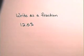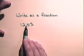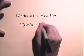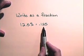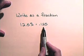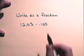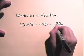Now let's write twelve point five percent, or twelve and a half percent, as a fraction. In order to change this percent to a fraction, we need to change the percent to a decimal. So we move the decimal two places to the left and remove the percent sign: twelve point five percent is 0.125. And now we can read this decimal as a fraction — this is one hundred and twenty-five thousandths.